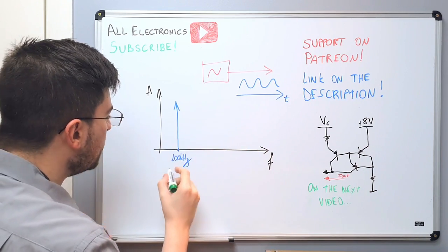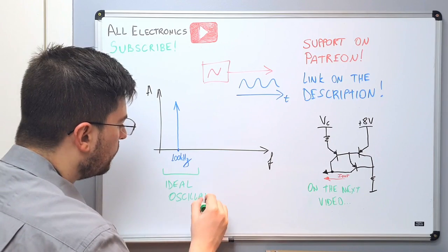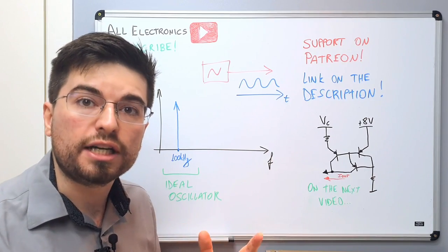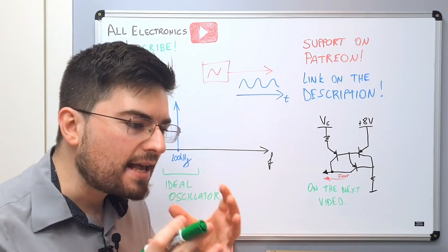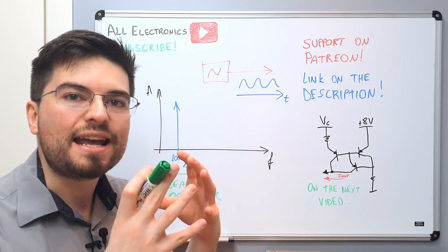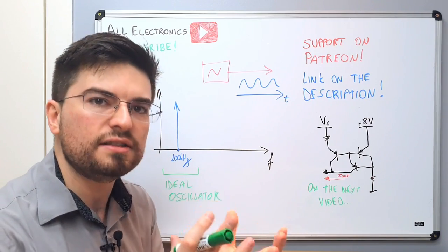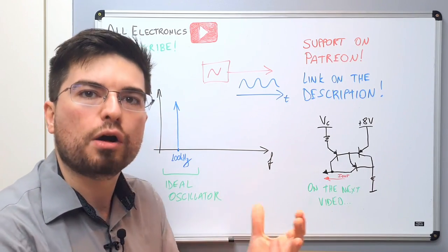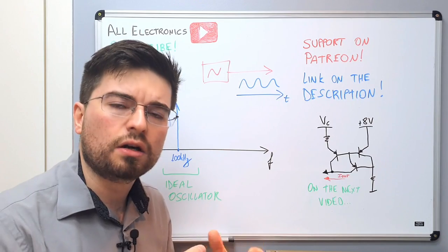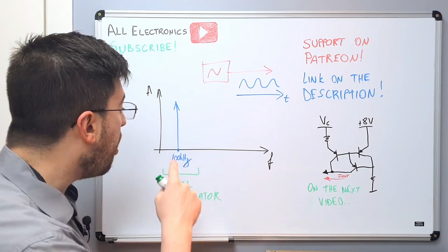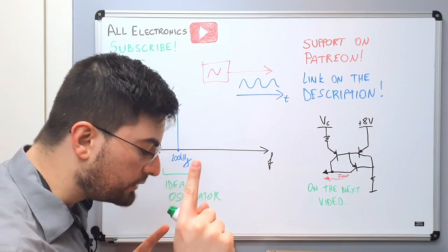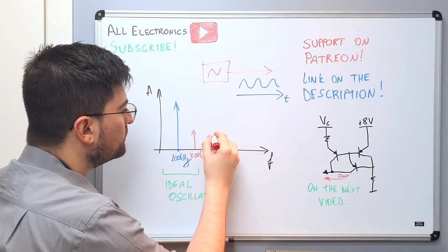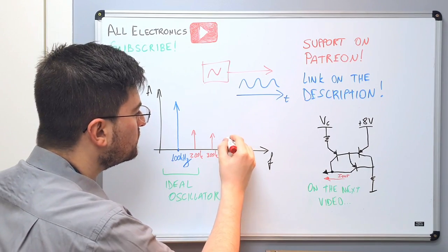Any real circuit, as we saw in the video about non-linearity, has an amount of non-linearities. Non-linear behavior distorts the signal, generating new frequency content at the output. So if we take a look at the output of the oscillator, we're going to see other tones — we're also going to see a 200 kilohertz tone, a 300 kilohertz tone, a 400 kilohertz tone, and so on.